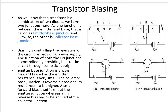The two PN junctions are: the emitter-base junction (first PN junction) and the base-collector junction (second PN junction). This applies to both NPN and PNP transistors. For proper working, the emitter-base junction should always be forward biased, and the base-collector junction should always be reverse biased.